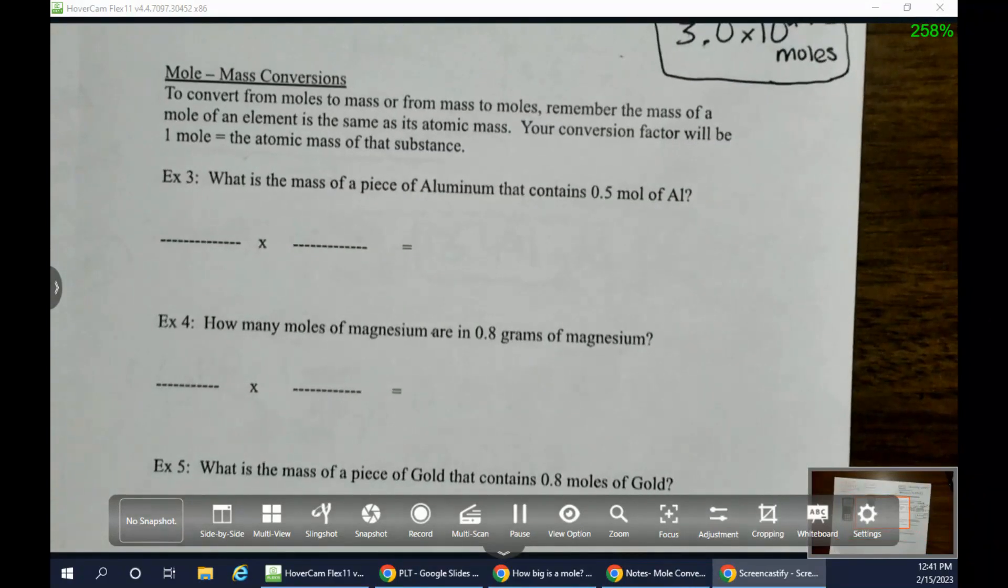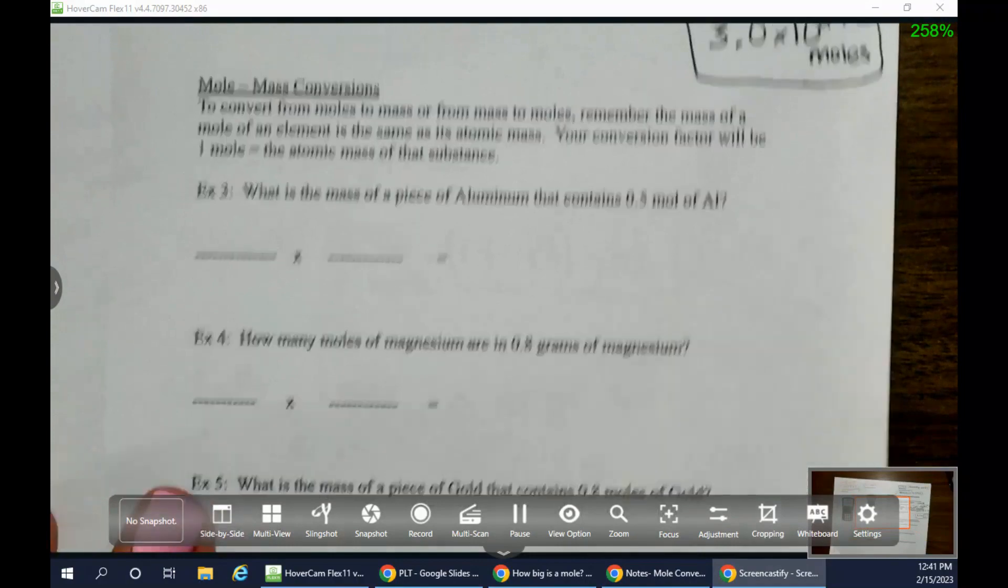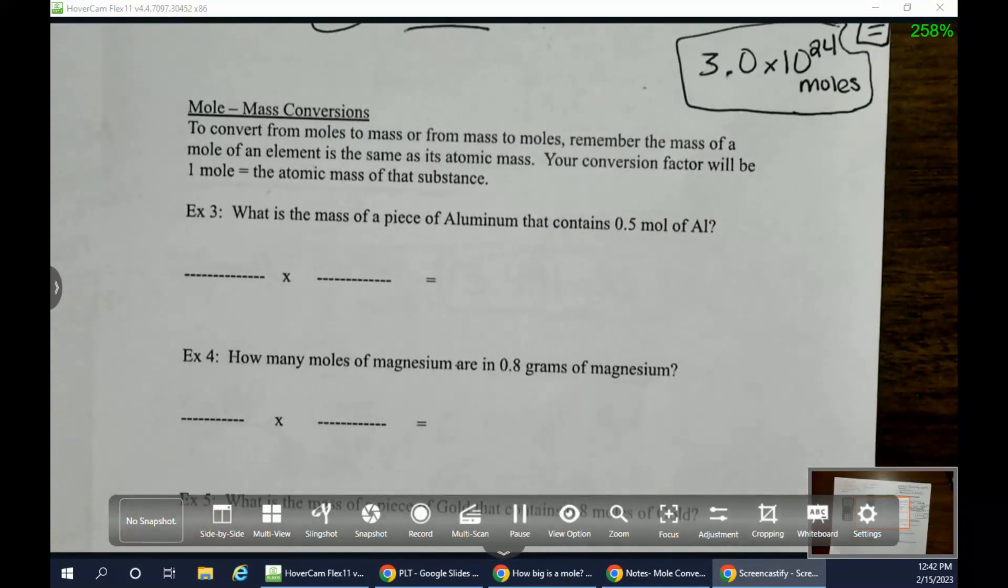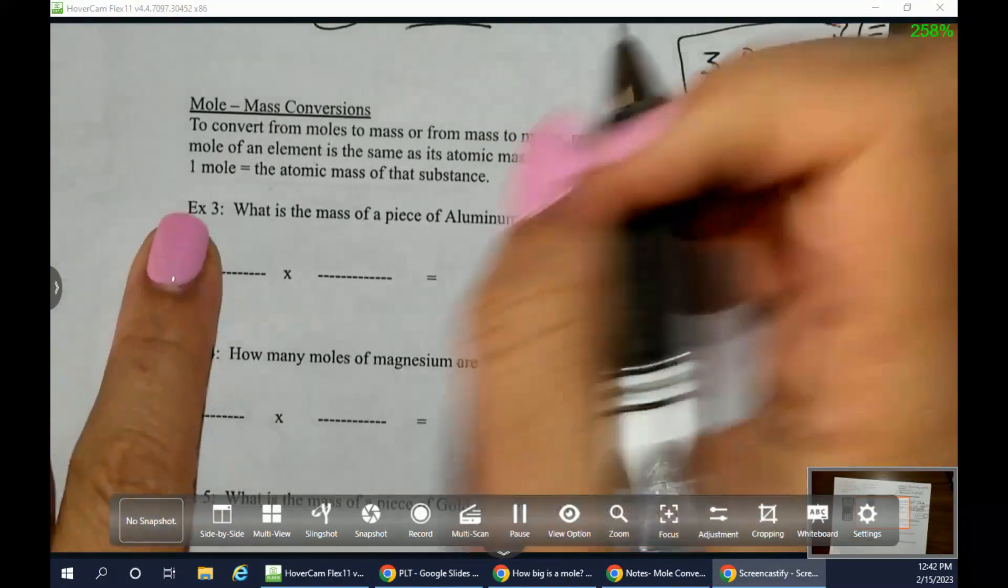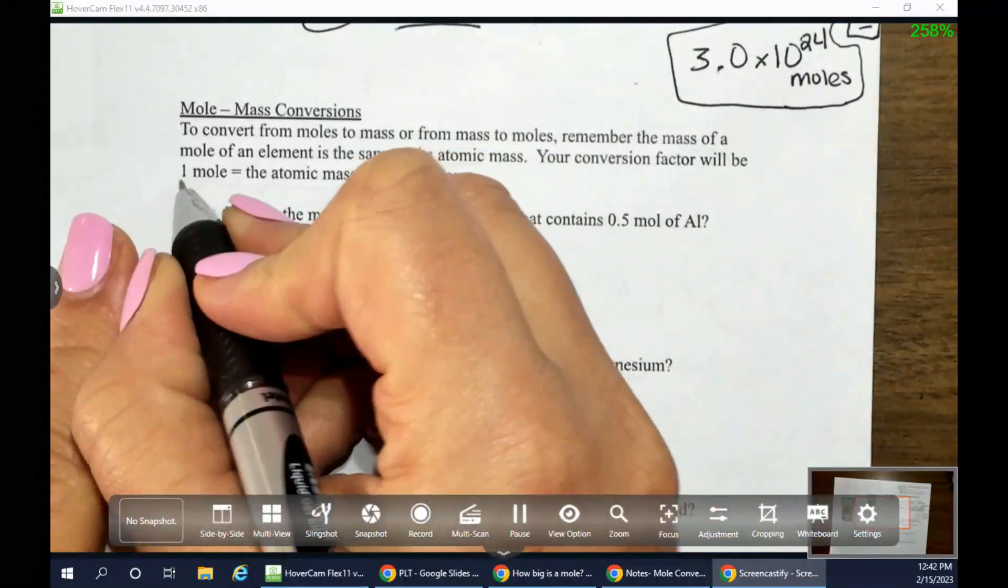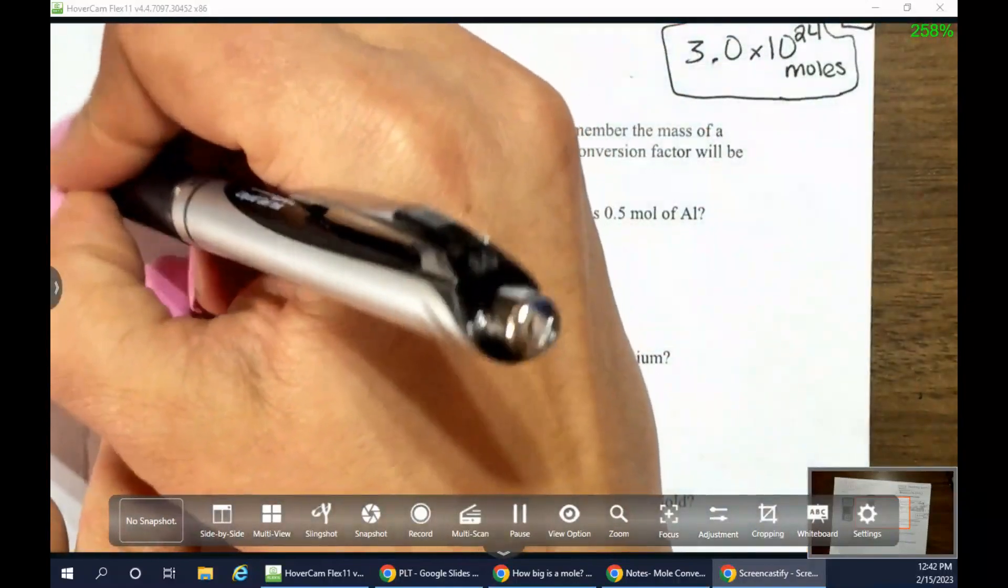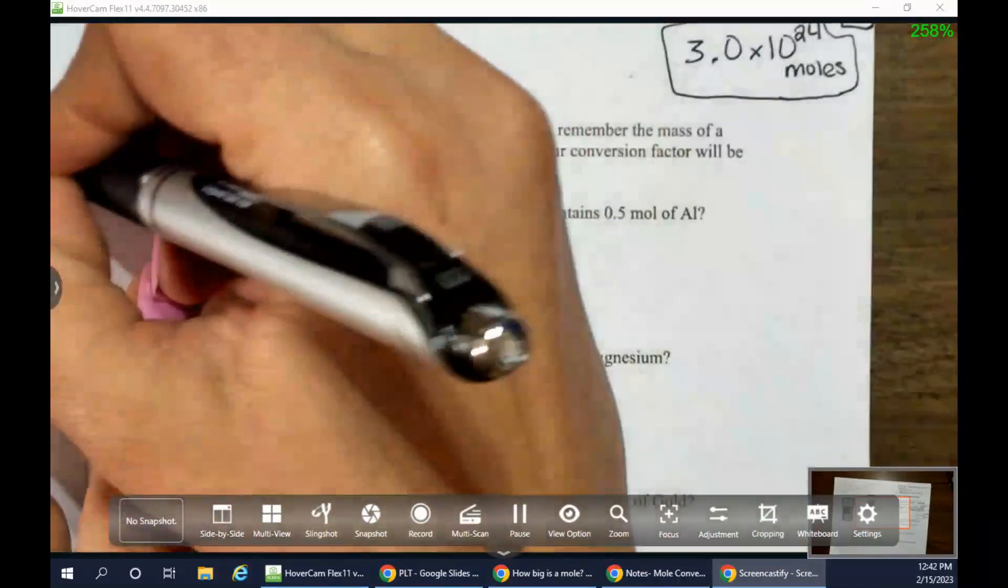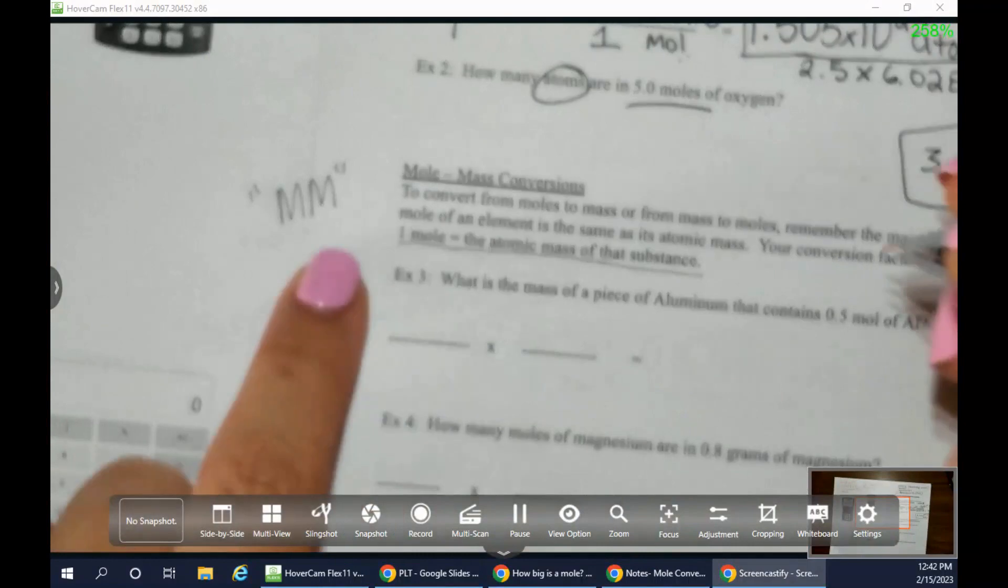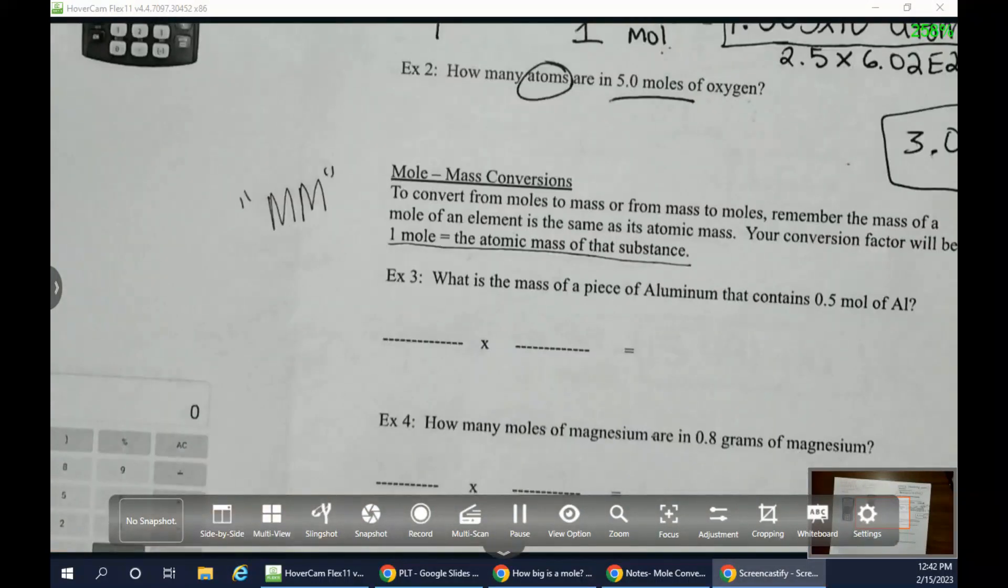Mole mass conversions is not really changing the process. The only thing is that we're not using Avogadro's number. Now what we're seeing is that one mole of something is the atomic mass of that substance, or the molar mass. So I'm just going to put it off to the side. This is the symbol that I use to represent molar mass, and you guys might see that show up in your help sheets and things like that. I'll put MM. That's what I'm talking about, molar mass.